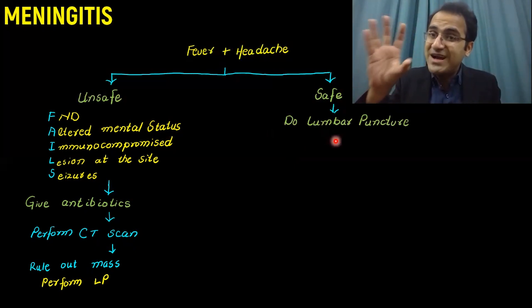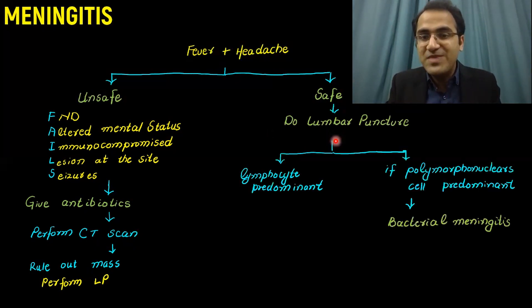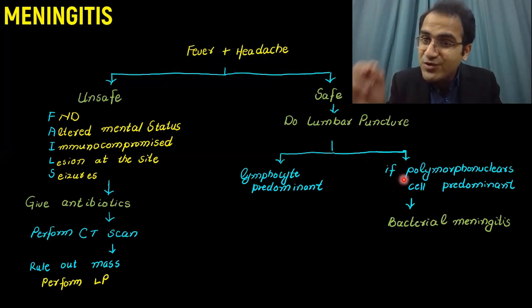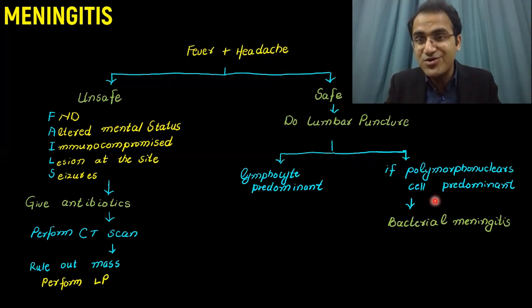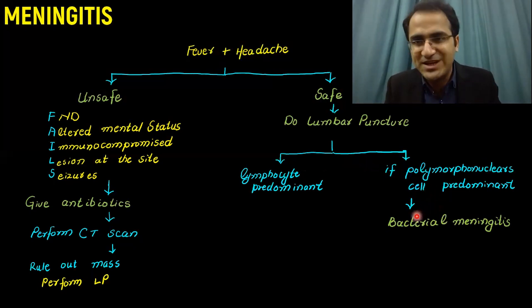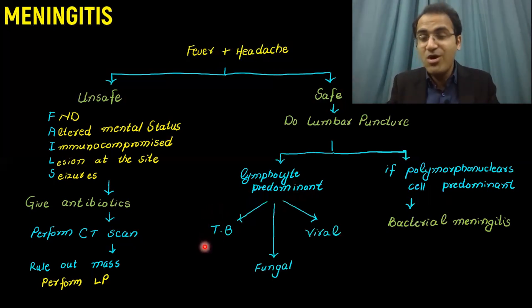From CSF cell count, assess whether it is polymorphonuclear (neutrophil) predominant or lymphocyte predominant. Neutrophil predominant CSF most likely indicates bacterial meningitis. Lymphocyte predominant CSF has three possibilities: TB, fungal, or viral meningitis.